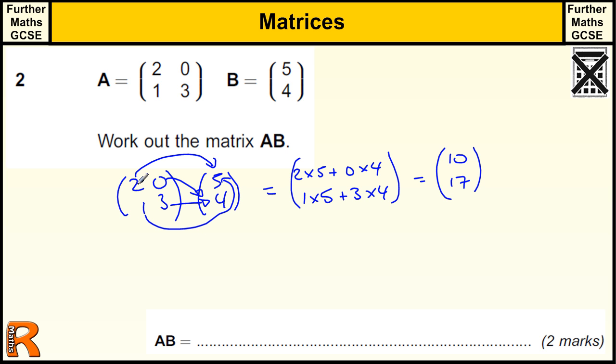So the way I imagine these is, when I'm looking at this, I take this sort of pair and twist it so that it's standing next to this 5, 0. So that 2, 0 becomes 2, 0. And you times that by the 5 and times that by the 4. And that gives you your top value, because you add them together.